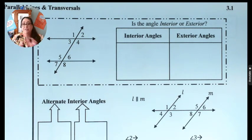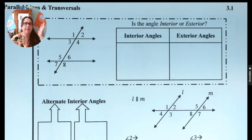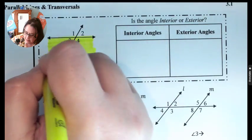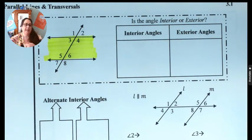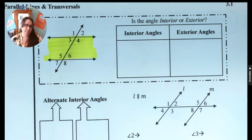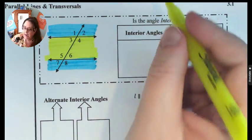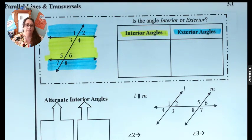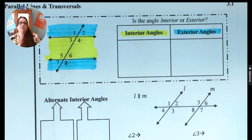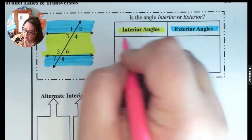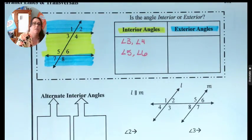Now let's look at interior and exterior angles. In relationship to the two lines connected by the transversal, we consider angles interior or exterior. The part between the two lines — highlighted in yellow — is your interior. The part above and below is your exterior. Interior is between; exterior is outside — just like a house: inside the walls is interior, outside is exterior. The interior angles are 3, 4, 5, and 6; the exterior angles are 1, 2, 7, and 8.